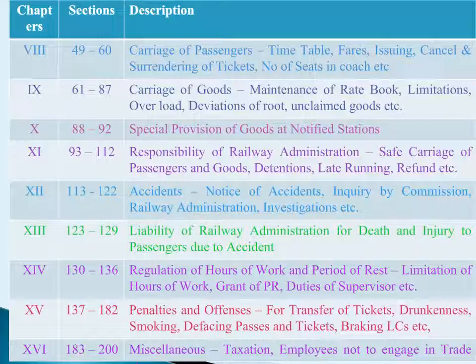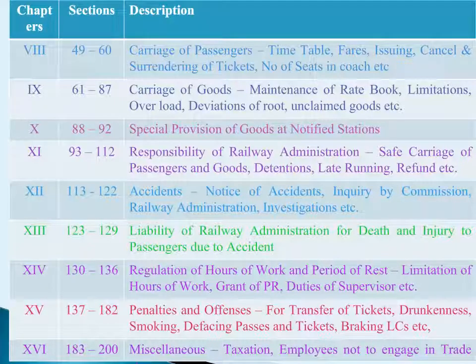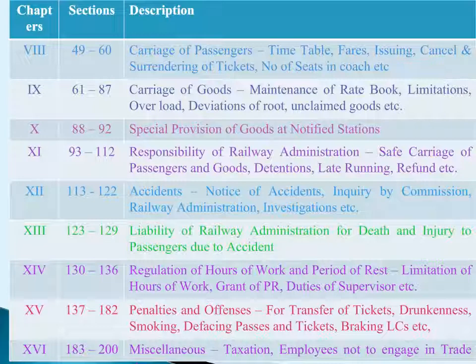Chapter 16: Miscellaneous has 18 sections, Sections 183 to 200. In these sections, power to provide other transport services, taxation on railways by local authorities, taxation on railways for advertisement, protection of action taken in good faith, railway servants not to engage in any trade, representation of railway administration, etc. are given.